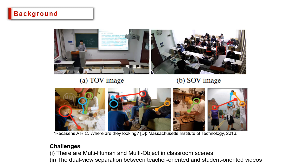Thus, to detect action and joint attention, there are two challenges that need to be resolved. The first is there are multi-human and multi-object in classroom scenes, and the second is the dual-view separation between teacher-oriented and student-oriented videos.